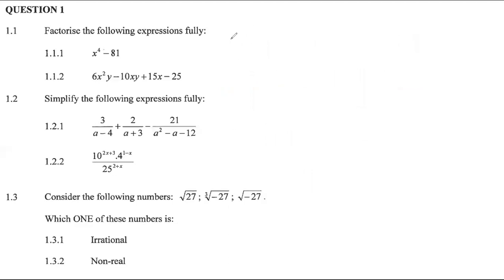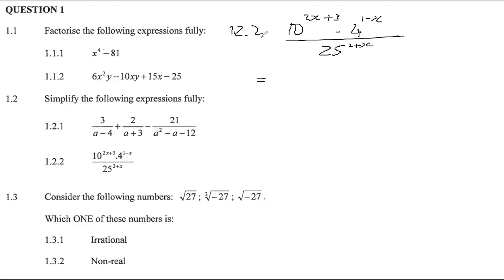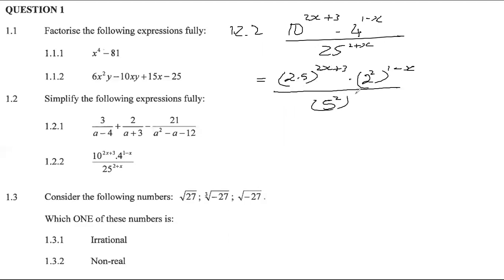Next is question 1.2.2: 10 to the exponent (2x plus 3) times 4 to the exponent (1 minus x), all over 25 to the exponent (2 plus x). The key is to write each base as a prime number or in terms of primes. 10 is a product of two primes: 2 and 5. 4 is 2 squared, so we have 2 squared to the exponent (1 minus x). 25 is 5 squared, so we have 5 squared to the exponent (2 plus x). There's also a law of exponents: (ab)^n = a^n times b^n, which we'll apply.